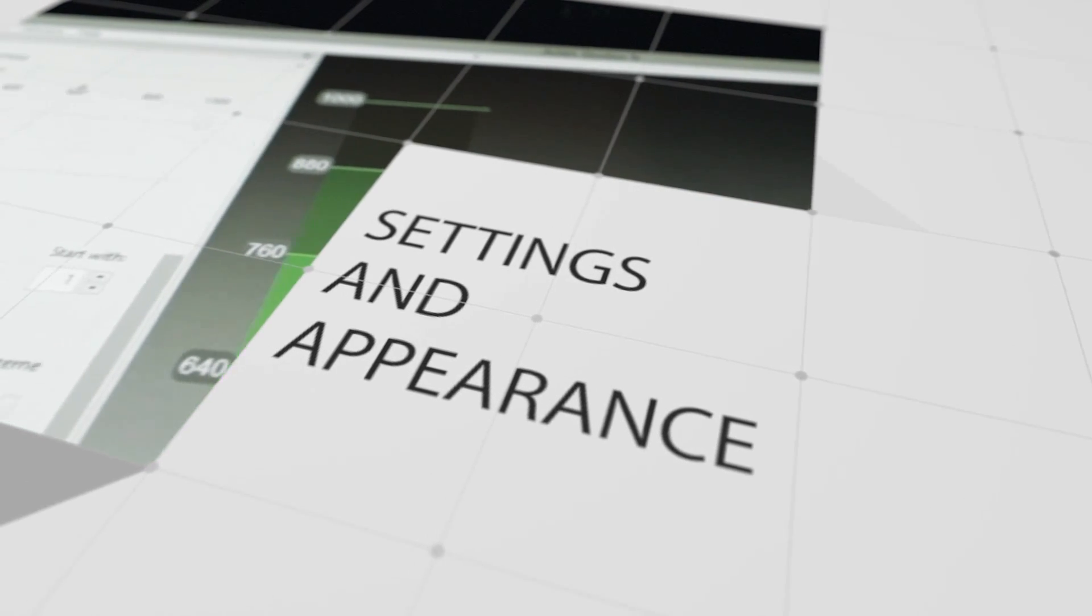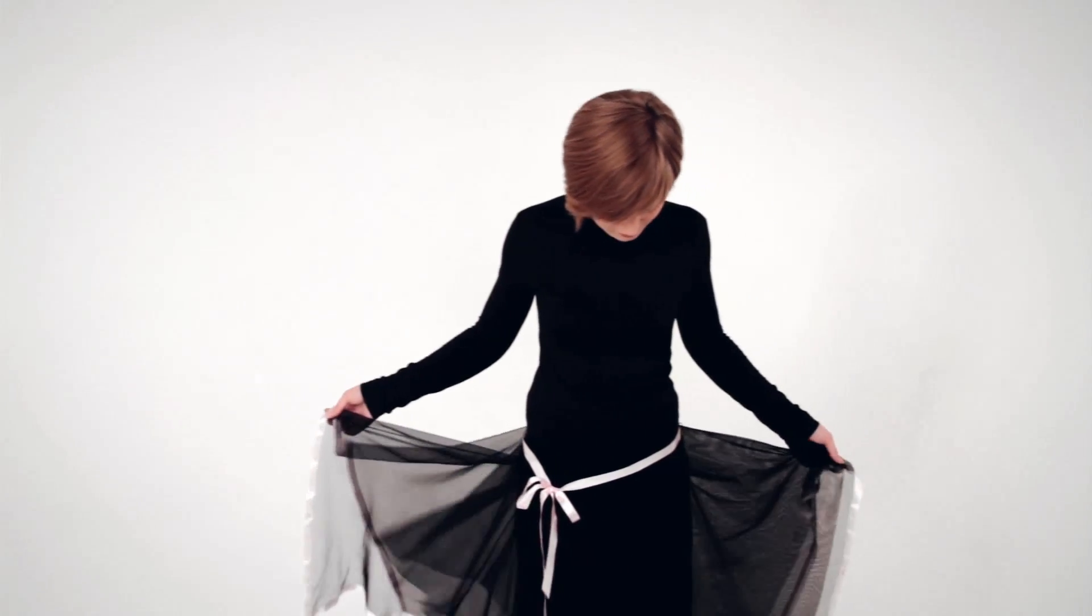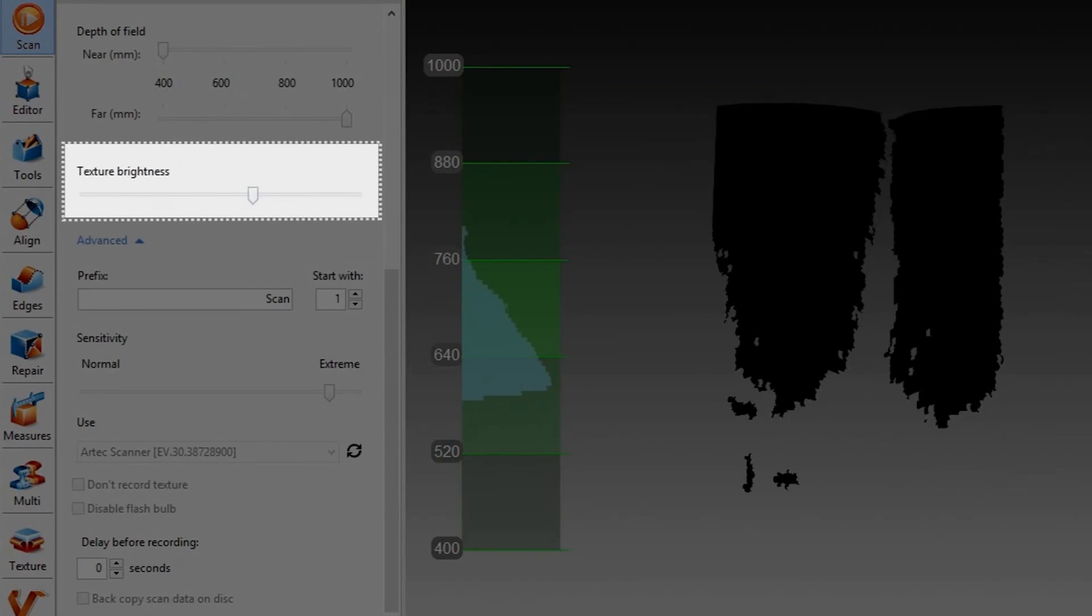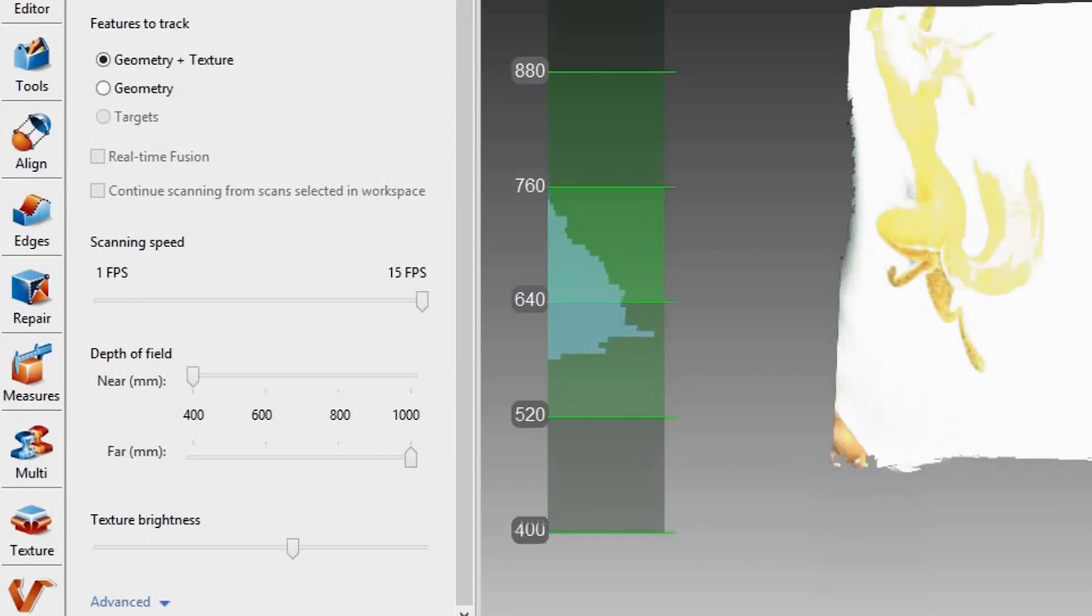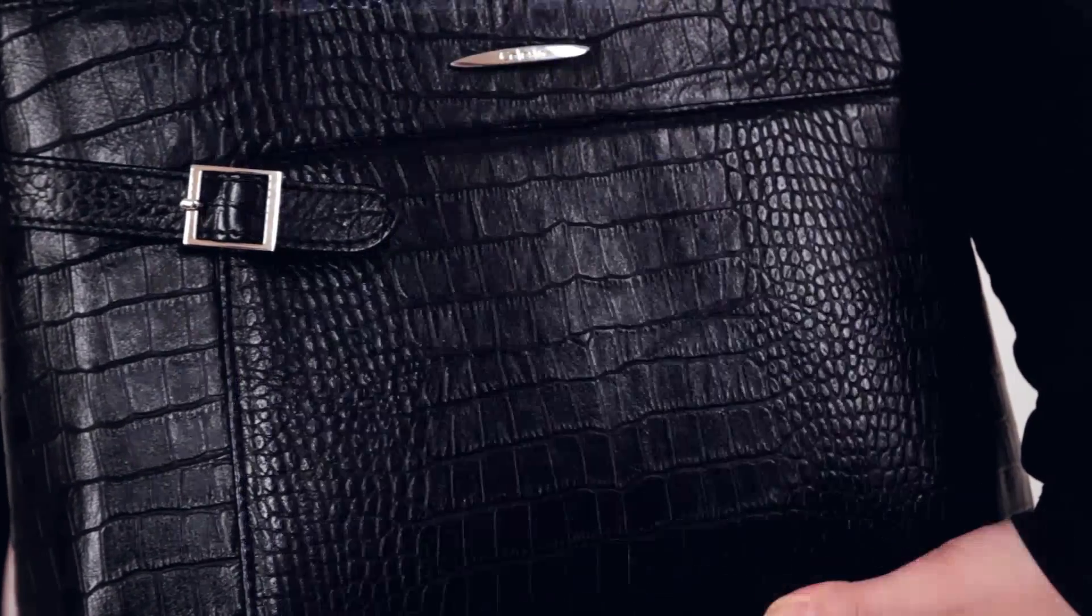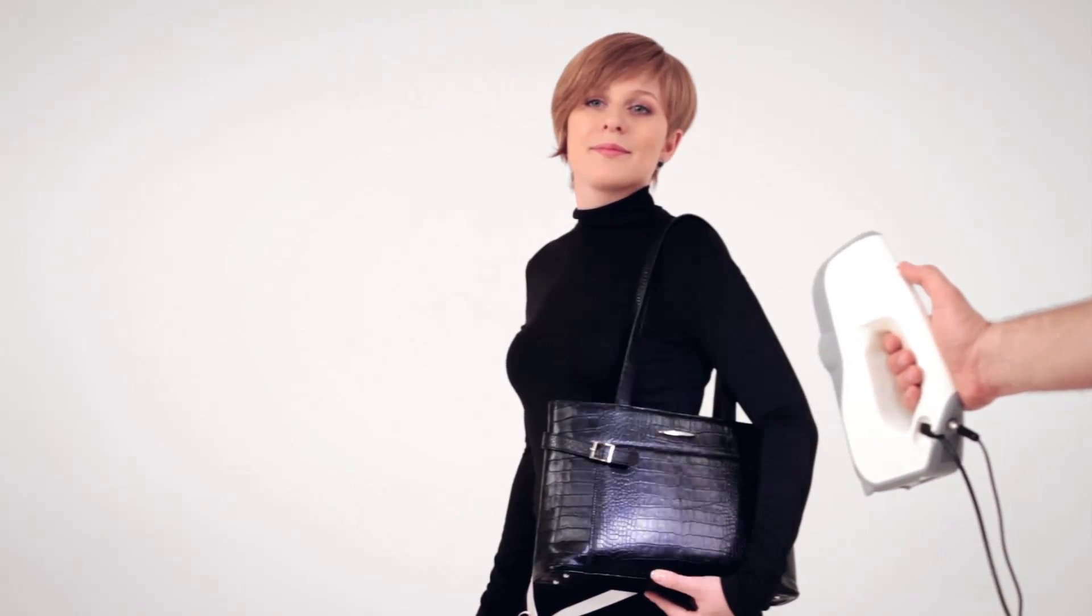Although it is possible to scan virtually anything, clothing and accessories can affect the quality of the scan. If the person is wearing dark or black clothes, consider increasing the texture brightness to make scanning easier. The opposite is true if the person is wearing white. If the person is wearing materials that are difficult to scan, increase the sensitivity.